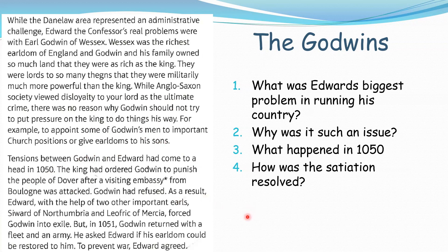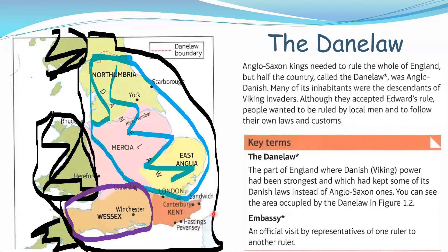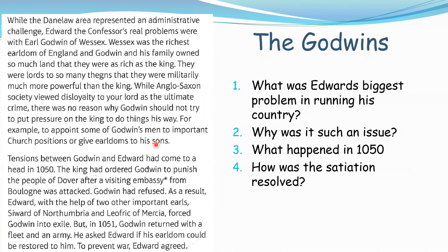In 1050, this power struggle between the king and the Godwins really came to a head. The king ordered Godwin to punish the people of Dover. What had happened was the people of Dover had attacked a visiting embassy from Boulogne in France - a peaceful political group who had come to have discussions with the king. They attacked and killed them. So the king ordered the Godwins to attack the people of Dover and punish them.